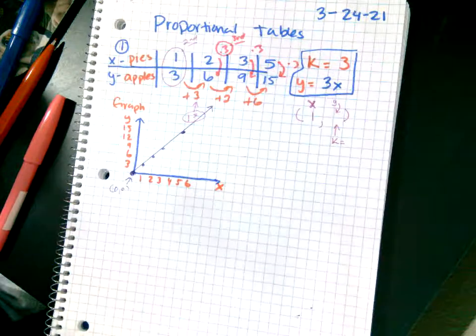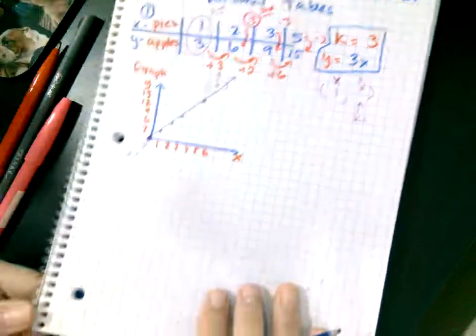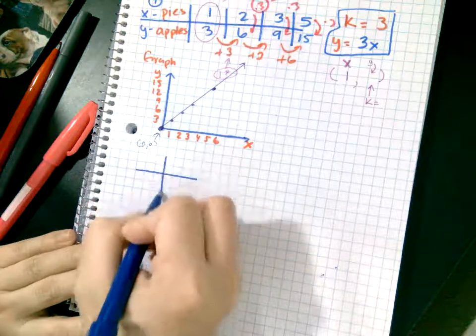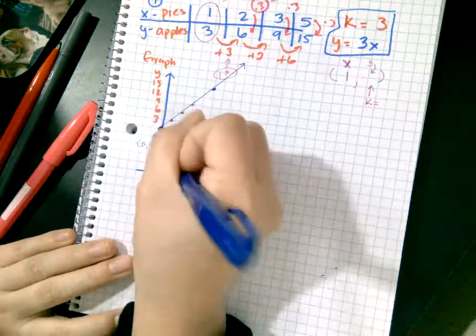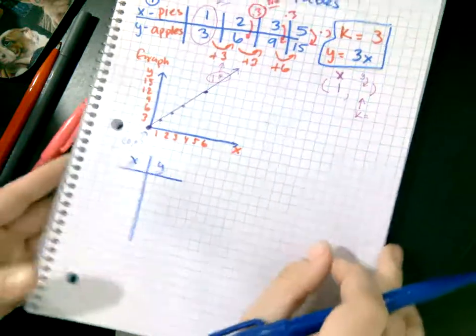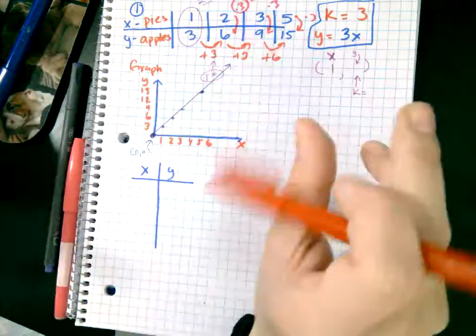To get your unit rate, sometimes you're going to get a table that's vertical. Same thing, exact same thing, except it's just vertical. You're going to deal with it the same, same, same way.